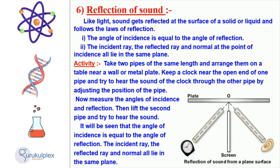To experiment with this theory, take two pipes of the same length. Place one end of the pipe near a wall or metal plate, and place a clock near the open end. Place the other pipe near the clock until you can hear the sound. Measure the angle of incidence and reflection, you will find that they are both equal.